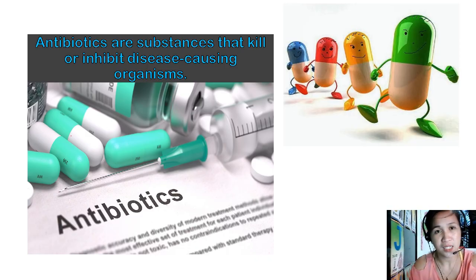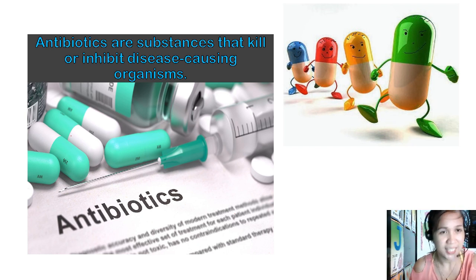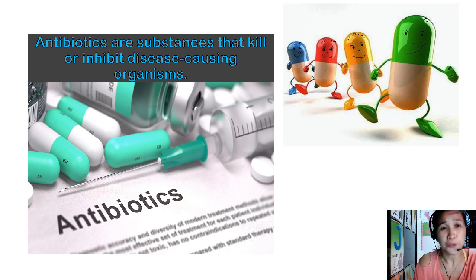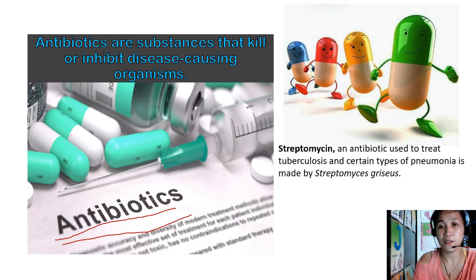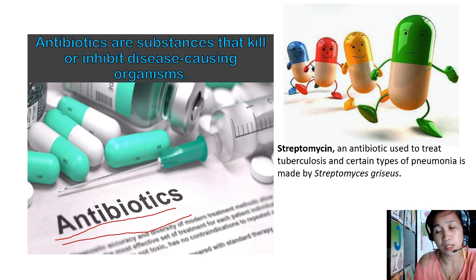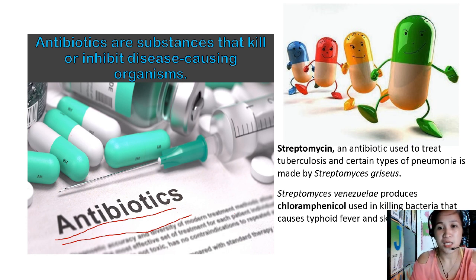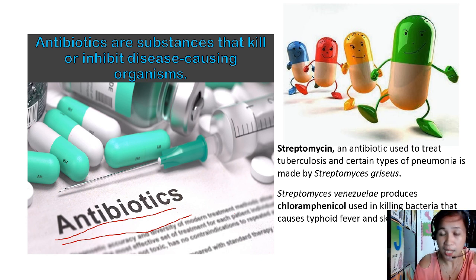Antibiotics are substances that kill or inhibit disease-causing organisms. You know that antibiotics also come from bacteria — good bacteria. One example is Streptomyces griseus. Streptomycin is an antibiotic used to treat tuberculosis and certain types of pneumonia, and it is made by Streptomyces griseus. Another example is Streptomyces venezuelae, which produces chloramphenicol, used in killing bacteria that cause typhoid fever and skin infections.